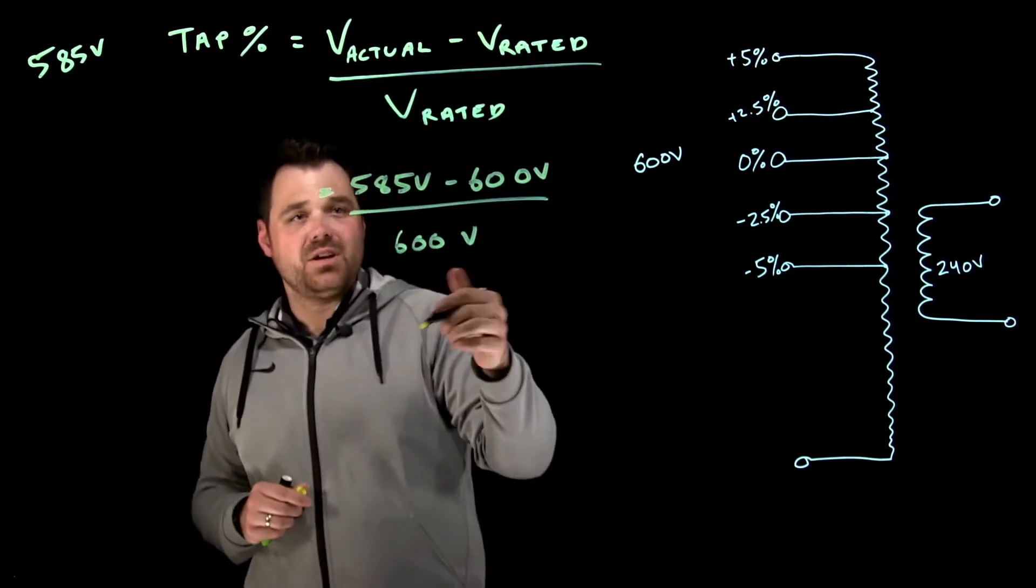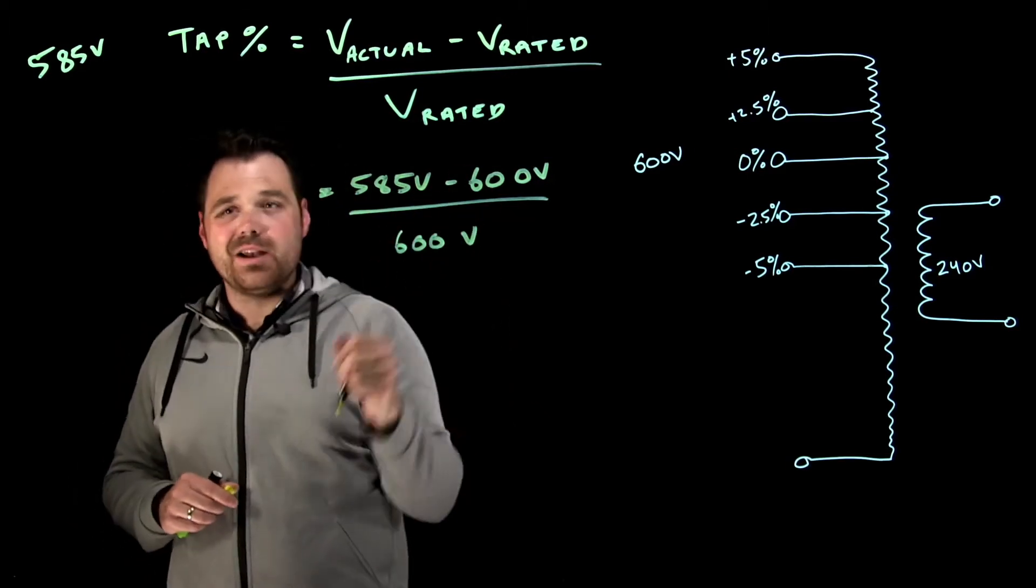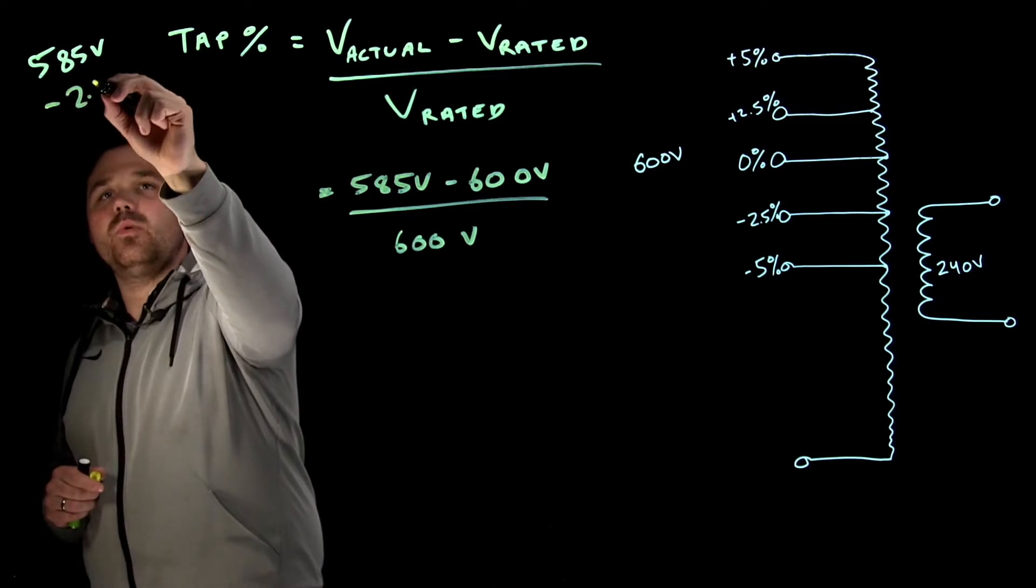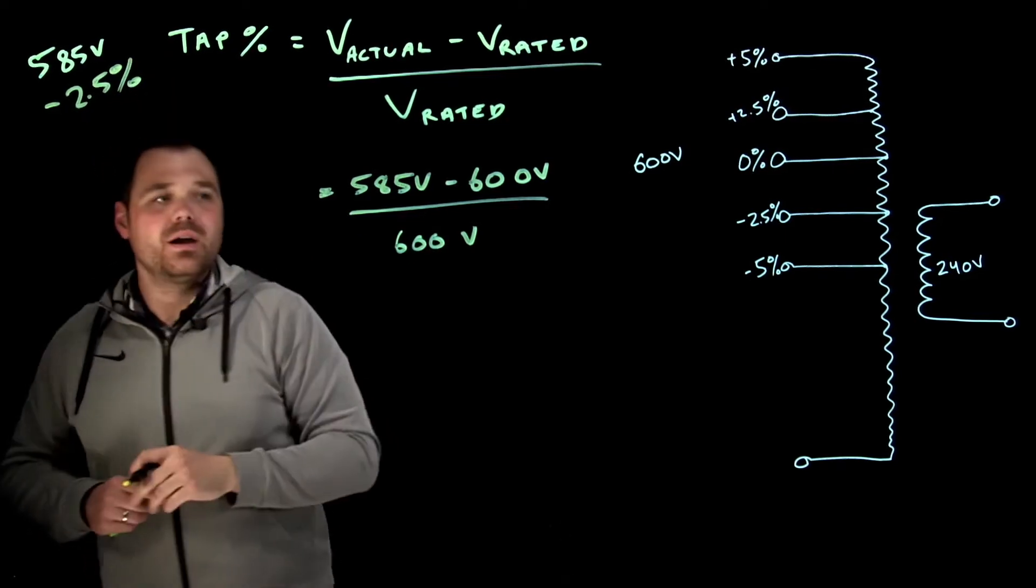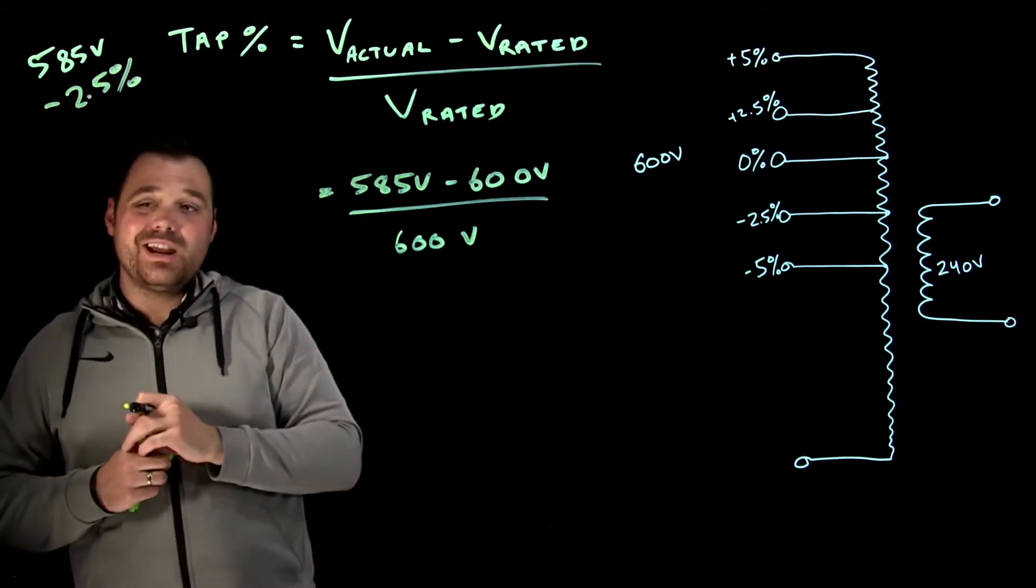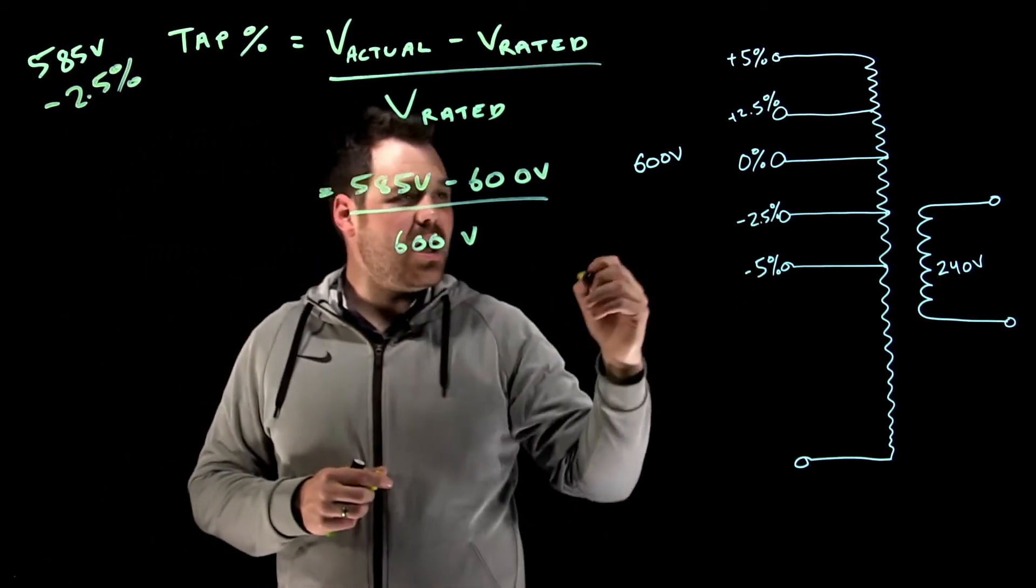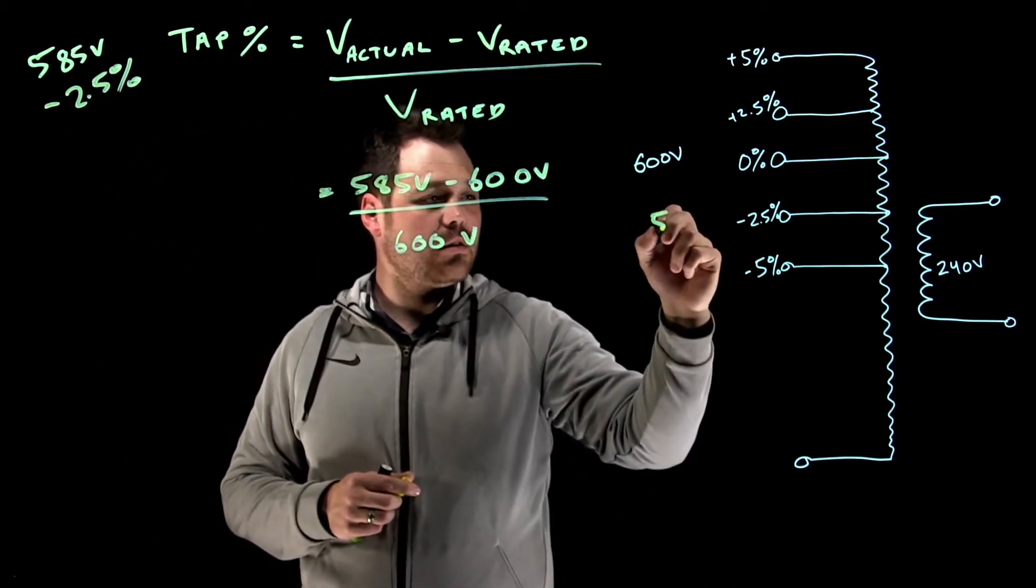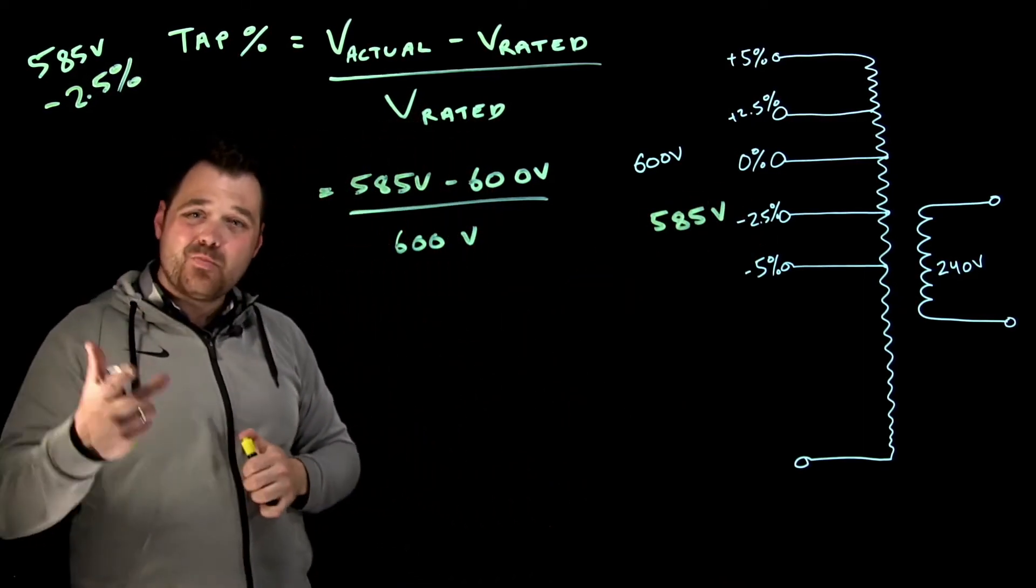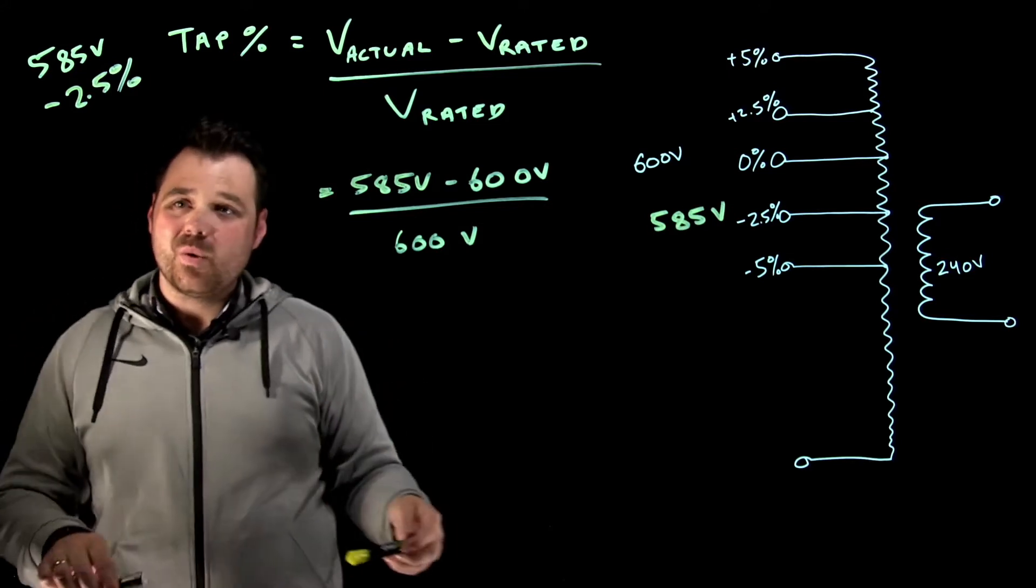Okay, that is going to give me negative 15 divided by 600 gives me a negative 2.5% tap. So if I were to connect my 585 volts up to negative 2.5%, I would get my rated output of 240 volts.